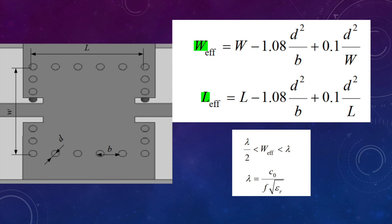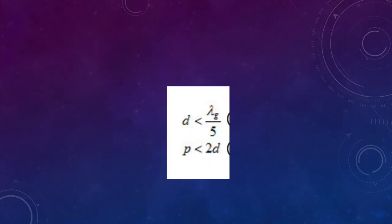Another thing is effective width. As for the effective length and effective width, it can be calculated by these two equations. The letter D and the letter B stand for the diameter of the metal vias and the pitch. The pitch is the center to center distance between two vias. Effective width should be larger than half of a wavelength and smaller than wavelength, which is calculated by these two equations. The diameter of the vias and the pitch are two important parameters. In most of the literature, they recommend that the via diameter should be smaller than guided wavelength over 5, and the pitch should be smaller than two times of the via diameter.